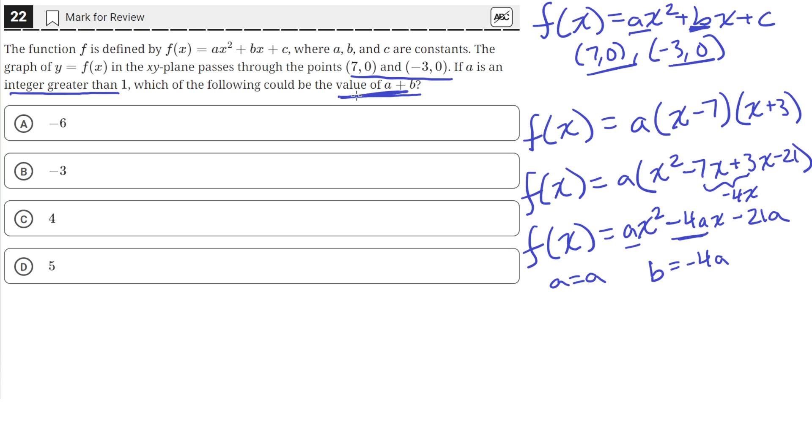Okay, so let's rewrite this term that we're trying to find. We're trying to find the value of a + b, but this equals a + negative 4a. So that means a + b actually equals negative 3a.